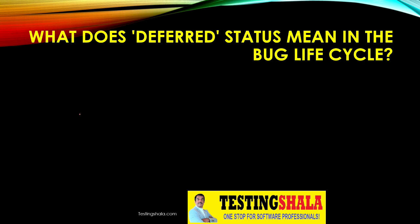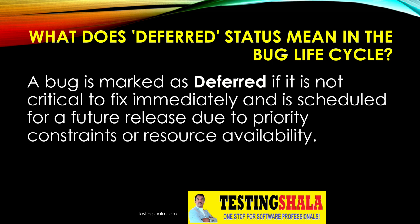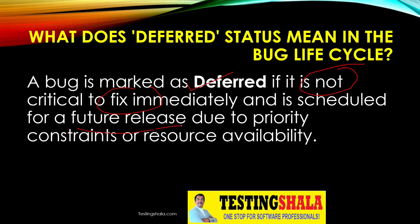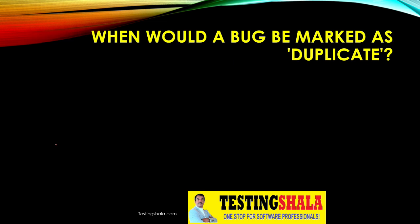What does the deferred status mean in the bug life cycle? Deferred means if a bug is not critical, it may not be fixed immediately. Instead, it is scheduled for future releases based on its priority, impact to the customer, resource availability, or other constraints — that is when we mark the defect as deferred.